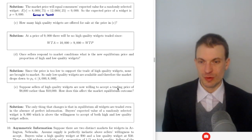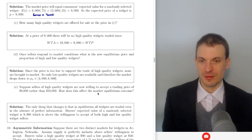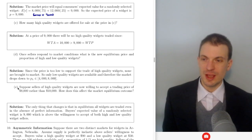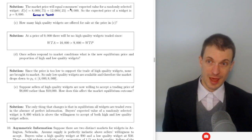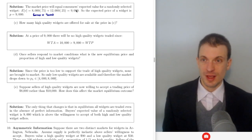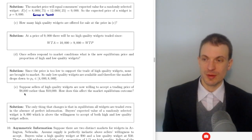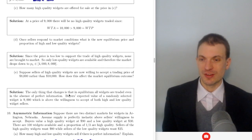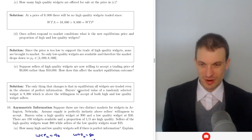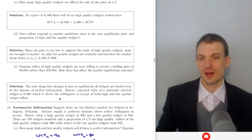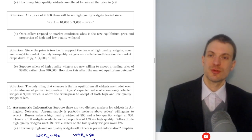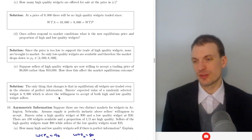Now suppose sellers of high quality widgets are willing to accept a trading price of $8,000 rather than $10,000. Buyers' valuation hasn't changed — it's still $9,000 for a randomly selected widget. However, $9,000 is now above the price sellers of good widgets are willing to accept. So the expected valuation of $9,000 is above the willingness to accept for both high and low quality widget sellers, and we expect the market to work.